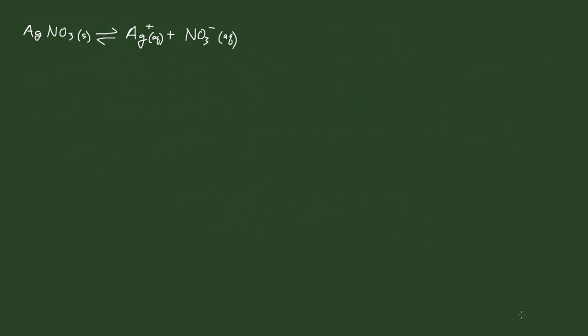Since this is an equilibrium reaction, we have a K. This K is going to be the concentration of the products divided by the concentration of the reactants. In this case, the products are going to be silver and nitrate, and that's going to be divided by the reactants. In this case, we have the actual silver salt.